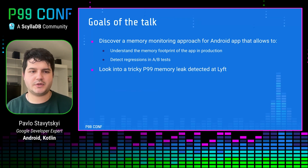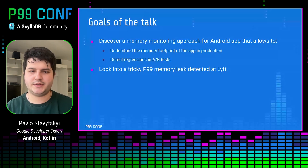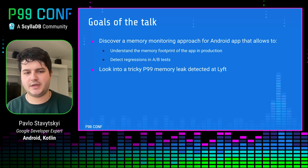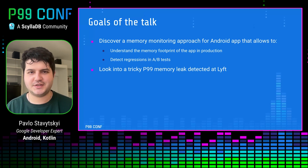The goal of the talk is to discover how to measure memory usage of the application, understand what the memory footprint is and how to measure it, and specifically how to detect regressions in A/B tests. We'll also look into some tricky use cases where a memory leak was detected at Lyft, which was happening at P99 — especially interesting since this conference is called P99 Conf.